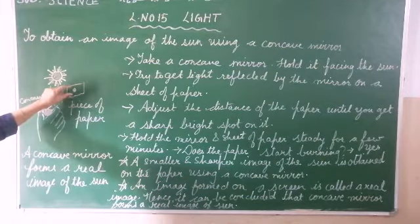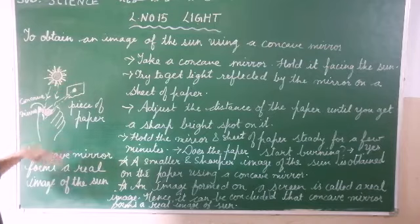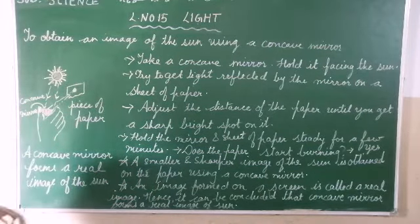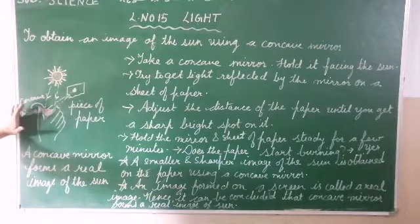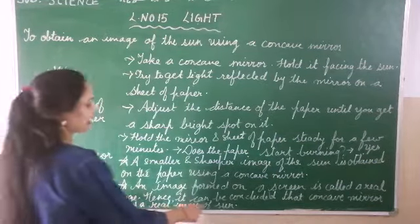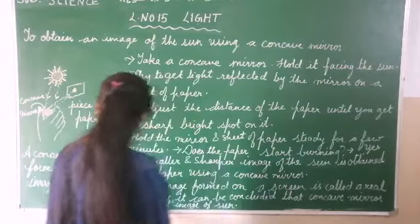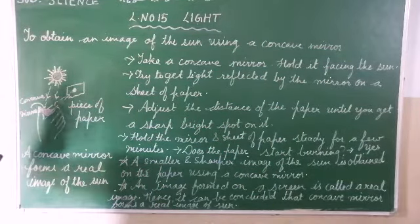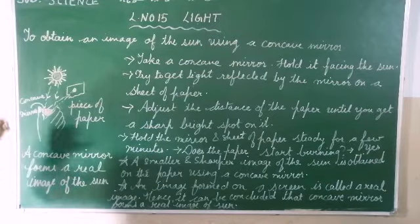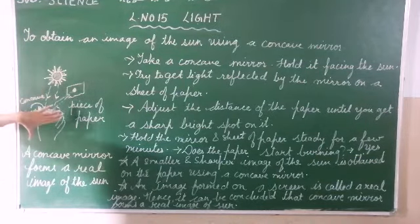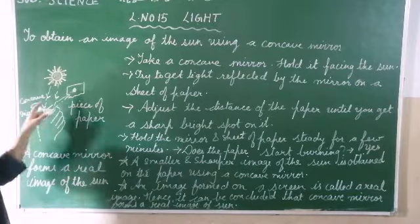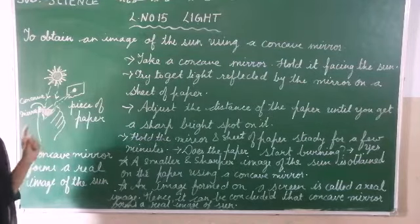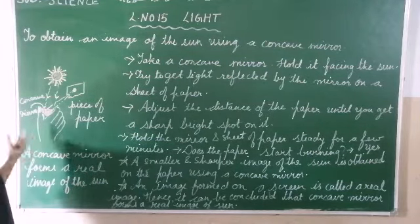A smaller, sharper image of the sun obtained on a piece of paper using a concave mirror — an image formed on a screen — is called a real image. Hence, it can be concluded that a concave mirror forms a real image of the sun. This is an experiment which can be conducted provided you have a concave mirror — not the normal flat mirror, but a concave mirror.